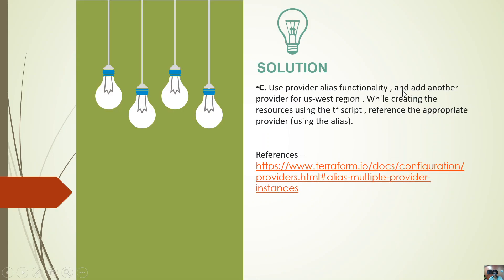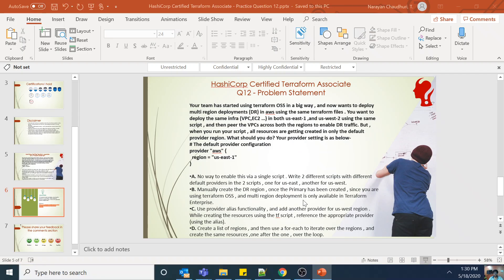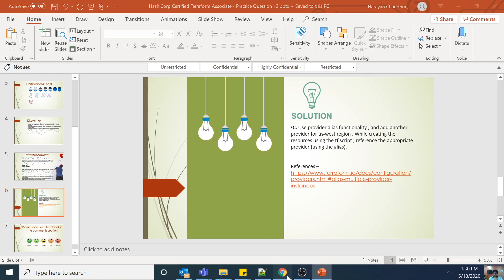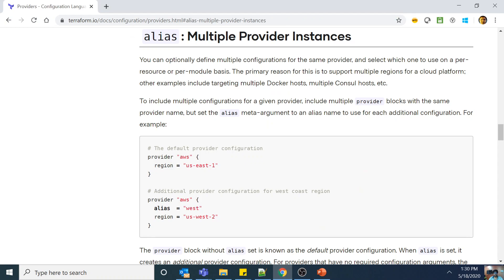The answer is C: use provider alias functionality and add another provider for the US-West region. While creating resources using the Terraform script, reference the appropriate provider using the alias. Let's quickly check the documentation.